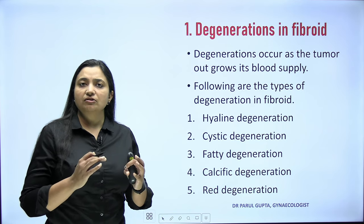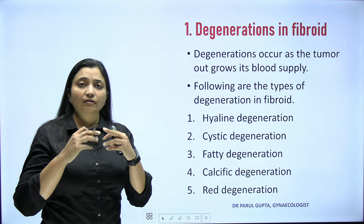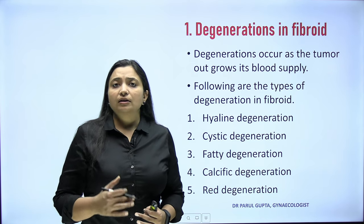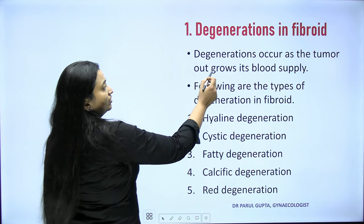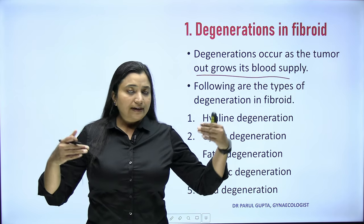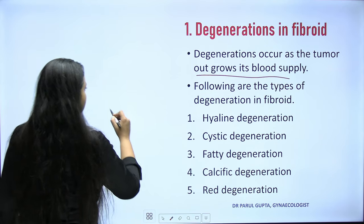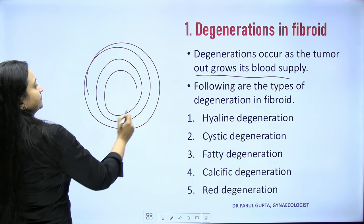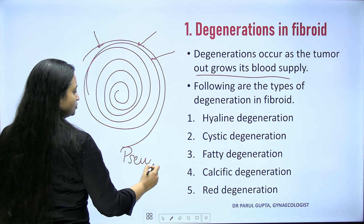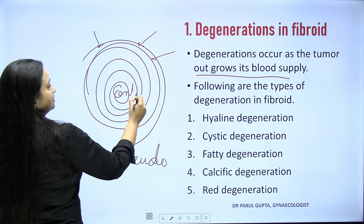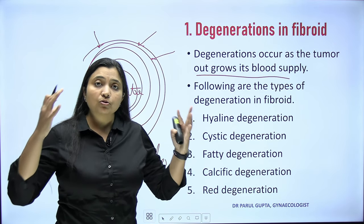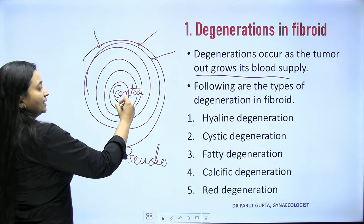Degeneration means the cells — we know the fibroid is a monoclonal thing, mostly cellular, containing smooth muscles and connective tissue — start degenerating. Degeneration occurs as the tumor outgrows its blood supply, generally in huge fibroids because blood supply enters from the capsule. As discussed in the last lecture, the fibroid has a whorled appearance and blood supply comes from the periphery through the pseudocapsule. So the center is always devoid of blood supply — degeneration mainly starts from the center.